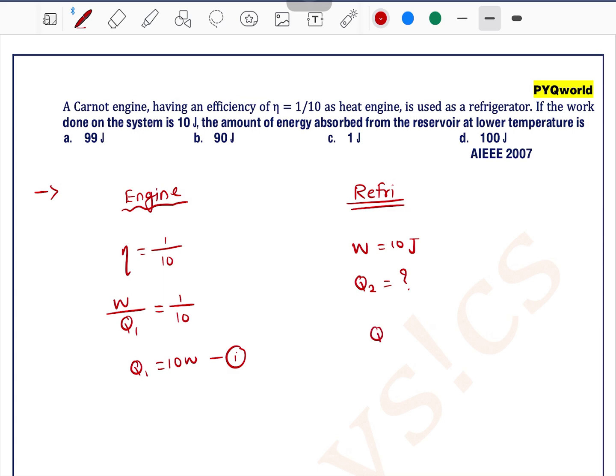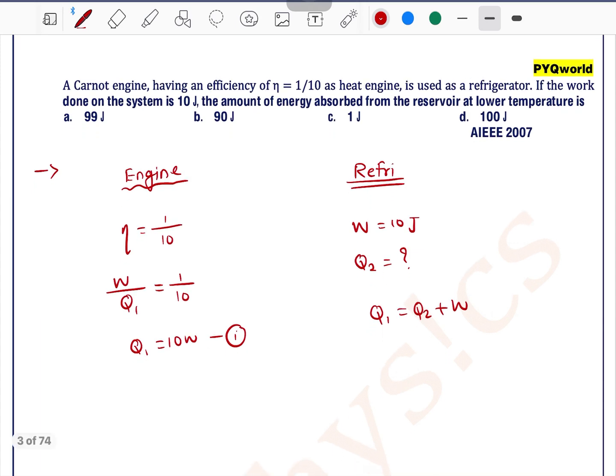So we can use the law of conservation of energy in that case and can write the equation Q1 is equal to Q2 plus W. So Q2 is heat extracted, W is work done, Q1 is heat rejected.